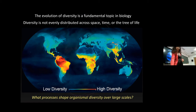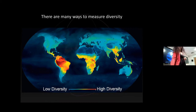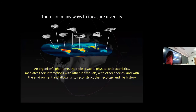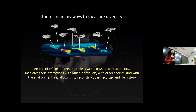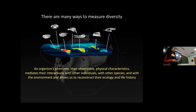Those examples focused on taxonomic diversity, but I really think about shape — what I call the phenome — the sum total of an organism's observable physical characteristics. I mainly think about this in terms of morphology, but it includes behavior, development, and chemistry. These characteristics are important because they mediate interactions with the environment, with other species, and with other individuals within their own species.